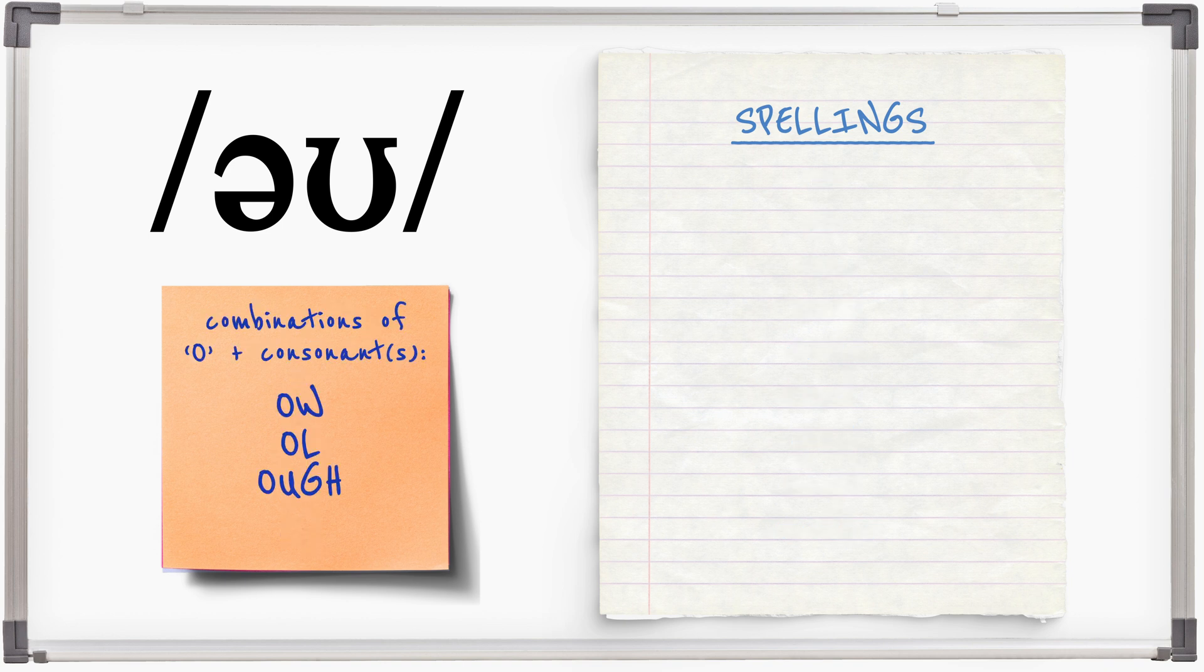Combinations of O and consonants are also possible: know, slow, folk, yoke, though, donut.